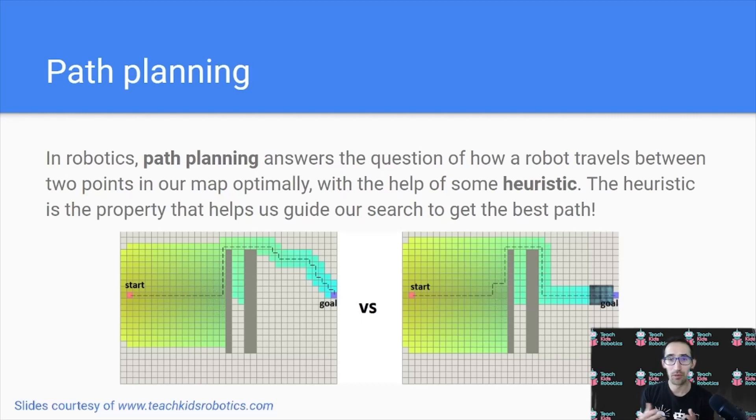In mobile robotics, this field is known as path planning. Path planning answers the question of how does a robot travel between two points in its map optimally? And it does so with the help of something known as a heuristic. The heuristic is the property that helps guide the search to get the best path, and that can encode information such as cost, or time, or a preference.